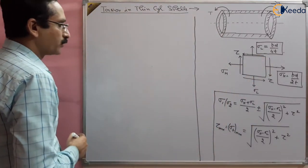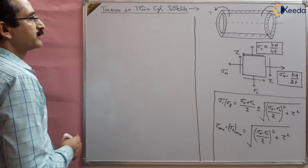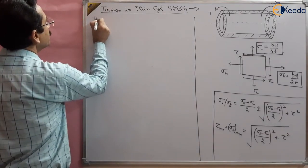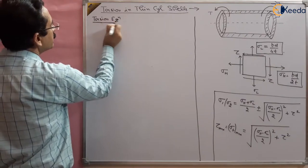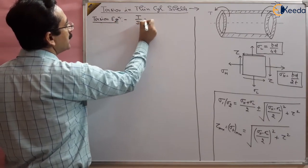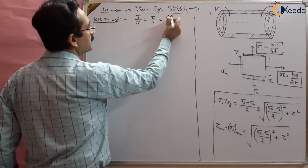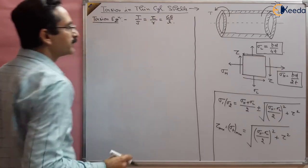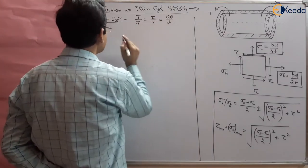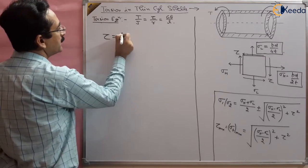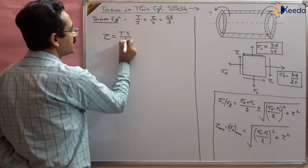So the shear stress needs to be found. We know the torsion formula — the torsion equation: T/J = tau/r = Gθ/L. Using this, the shear stress is given by tau = Tr/J, where r is the radius and J is the polar moment of inertia.